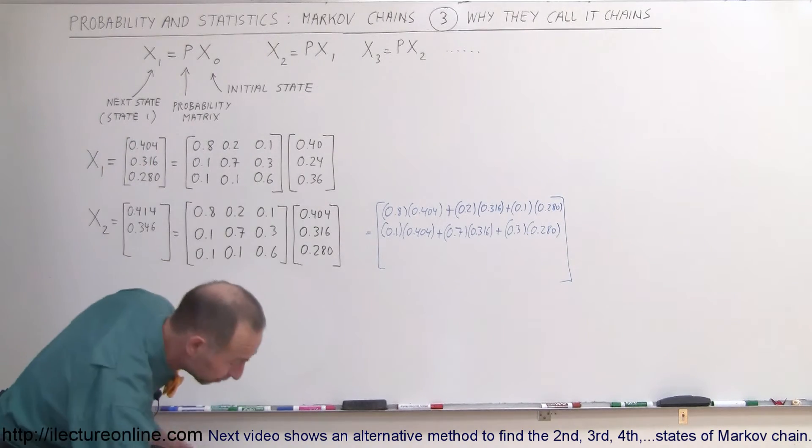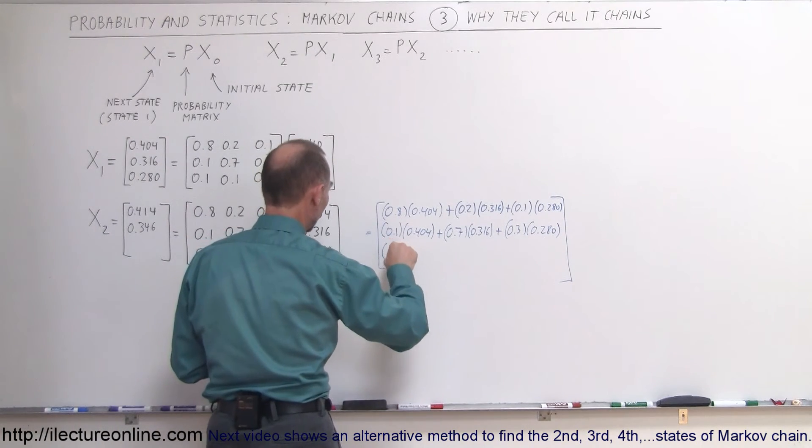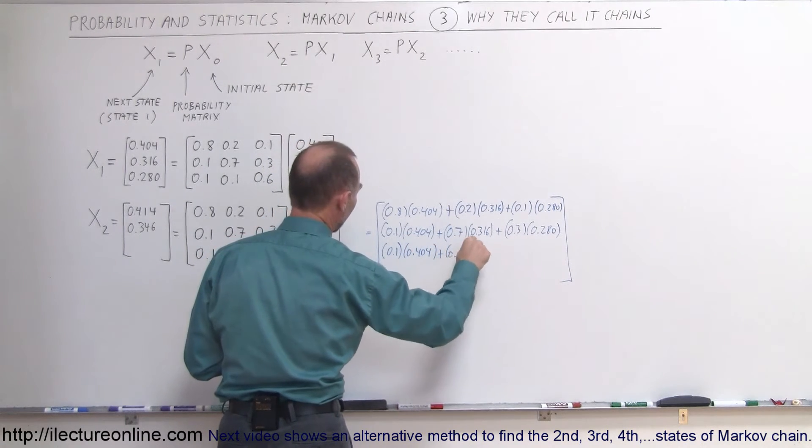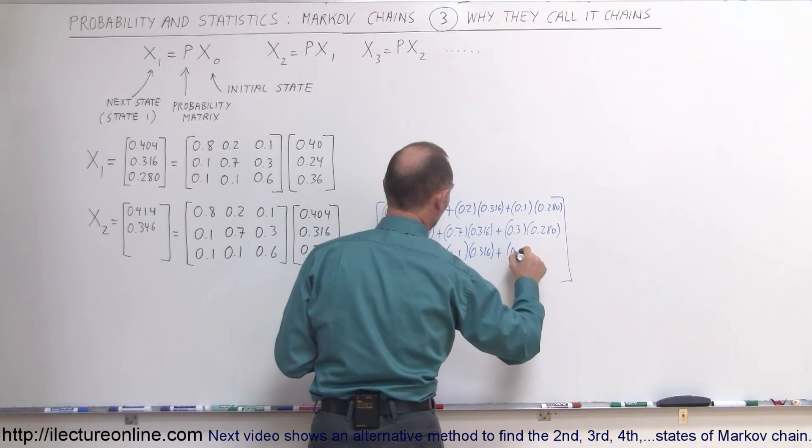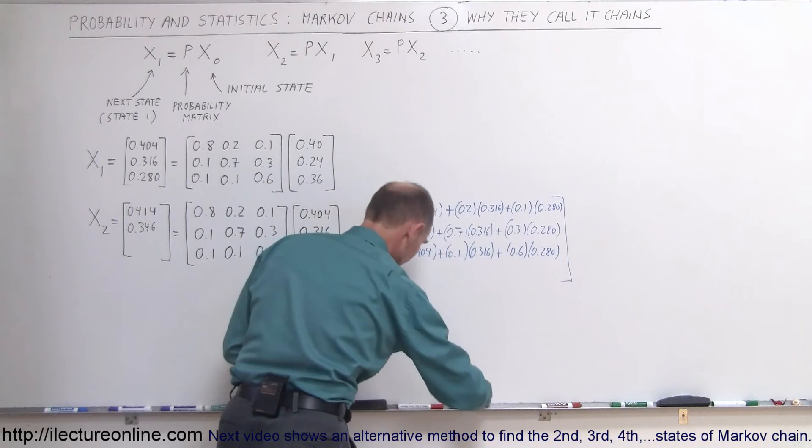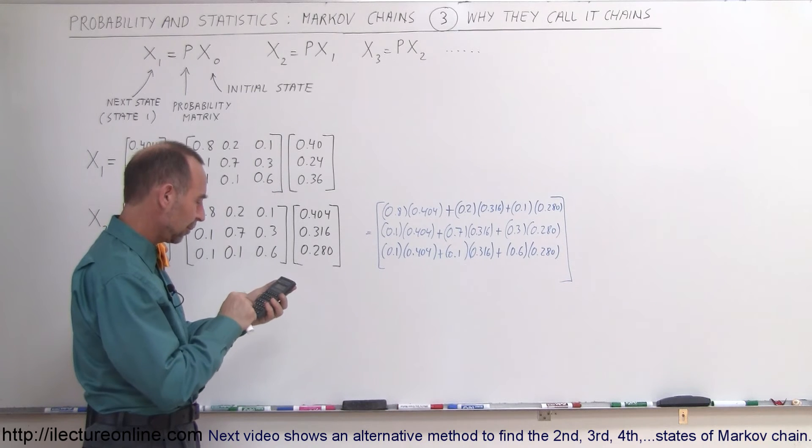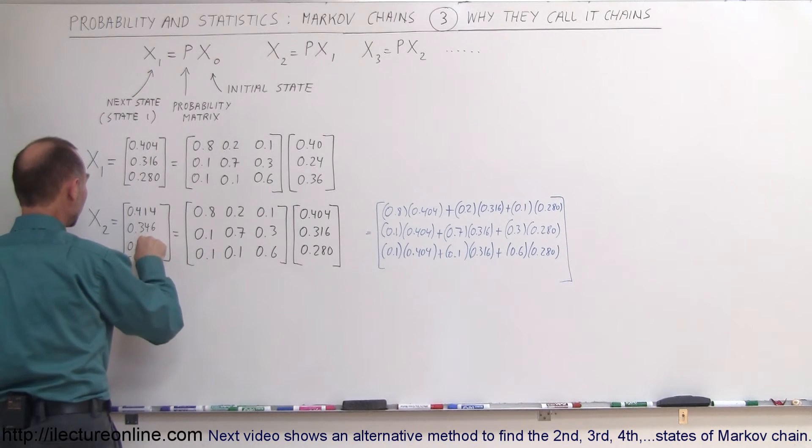Now next. We're going to multiply this row times this column and get 0.1 times 0.404 plus 0.1 times 0.316 plus 0.6 times 0.28. This gives us the third result. 0.1 times 0.404 plus 0.1 times 0.316 plus 0.6 times 0.28 equals 0.240.